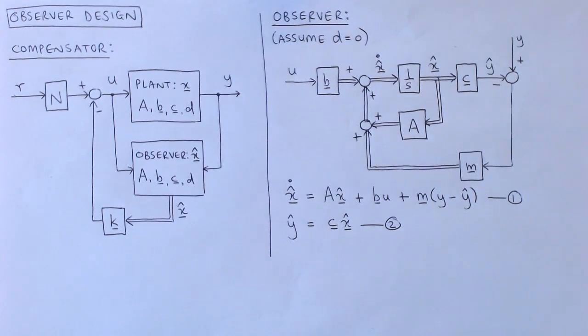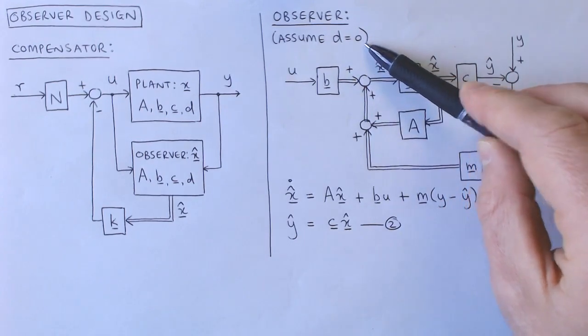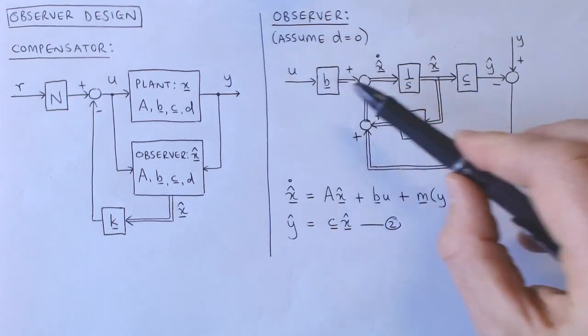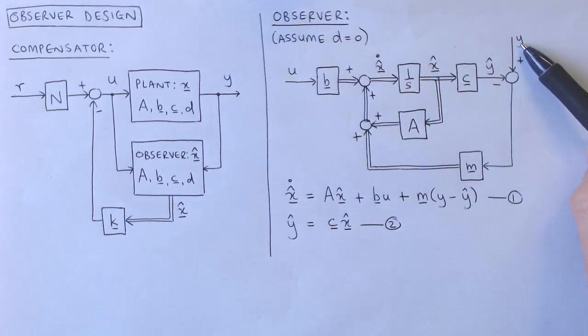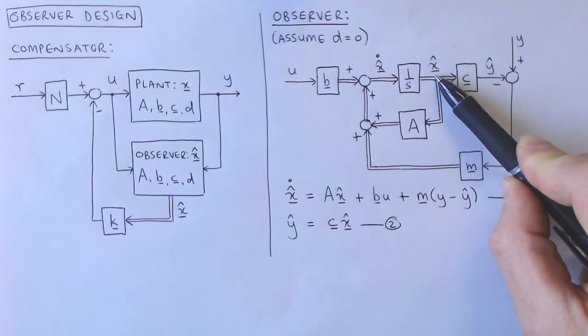The structure that we choose for the observer is shown in this block diagram, where we assume that the direct transmission term of the plant, D, is equal to zero. The inputs to the observer are the plant input U and the plant output Y, and the output of the observer is the estimated states X hat. The observer can be thought of as the combination of two mechanisms.